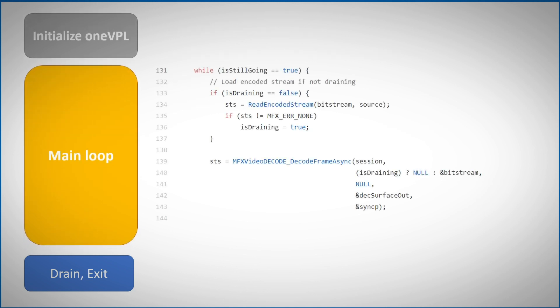A lot is happening in the main loop, but in general, as long as the stream is not ended, we keep bringing frame surfaces, locking and releasing them asynchronously, and decoding them one by one. This is OneVPL — state-of-the-art video processing on multiple devices, open source, open spec.